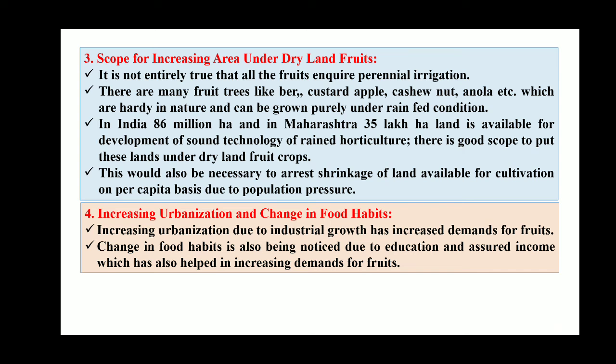Increasing urbanization and change in food habits is another scope. Due to the pandemic, people are consuming more fruits and vegetables. Because of urbanization and changing food habits, demand for fruits and vegetables has increased significantly, creating a lot of scope for fruit production.